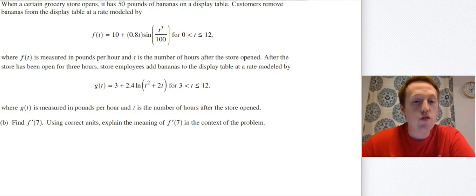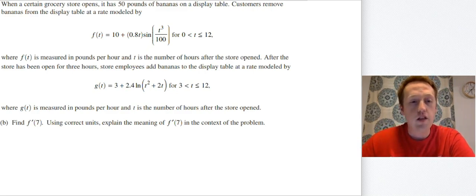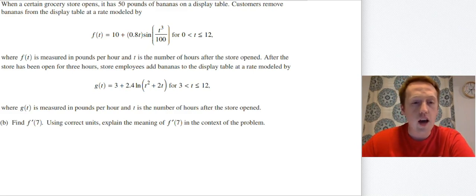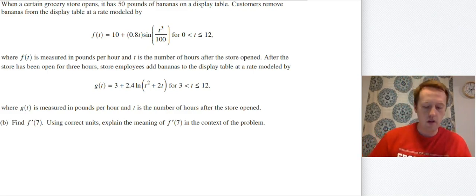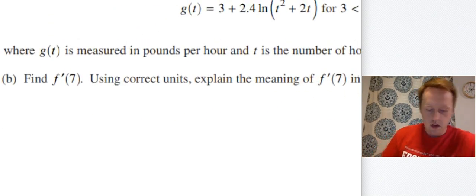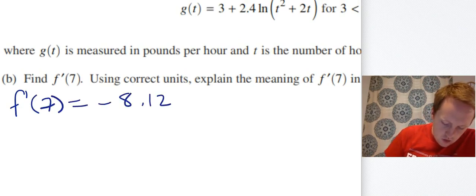Part B: find F prime of 7, using correct units, and explain the meaning of F prime of 7 in the context of the problem. This is a calculator question — you don't need to do the product rule or chain rule. You just go to the calculator and ask what the derivative is when T equals 7. When you do that, you find that F prime of 7 is equal to negative 8.120.